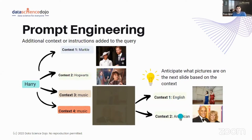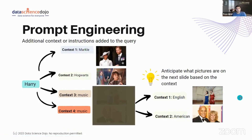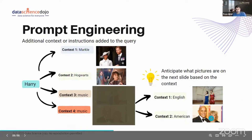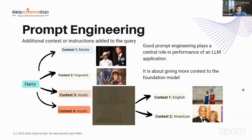In this case, I specified 'English' or 'American,' and the moment I said that, both were involved in music but now distinguishable — the first is an English musician and the second is an American. Good prompt engineering plays a central role in LLM application performance; it's about giving more context to your foundation model.